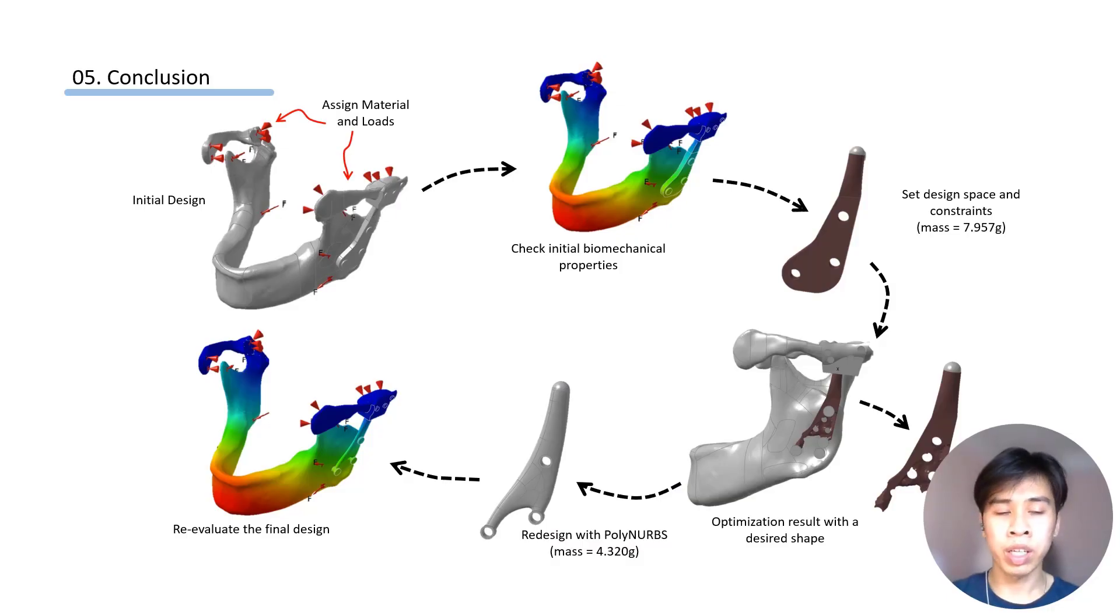In conclusion, we have this flow chart. We start with the initial design. After we're doing a mechanical evaluation, we set up the design space and constraints to obtain this optimized model here. We redesigned again with PolyNURBS. And the mass had reduced significantly by 45%. And we'll do a final evaluation of the model.